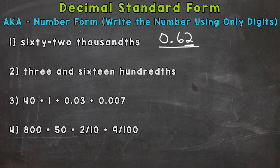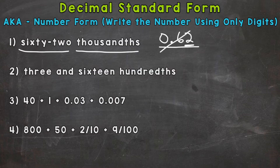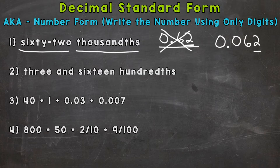Remember with word form: first name, write the number as is. So 62, and then thousandths — that means the 62 has to end in the thousandths place. So just writing .62 would not be correct; that would be 62 hundredths. What we need is a placeholder zero to bump that 62 so it ends in the thousandths place. And this gives us 62 thousandths: 0.062.